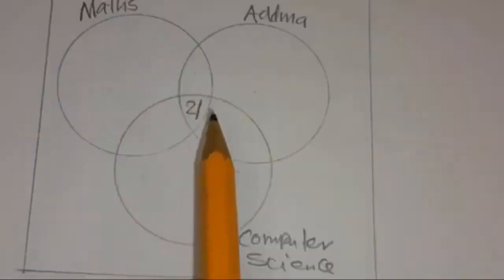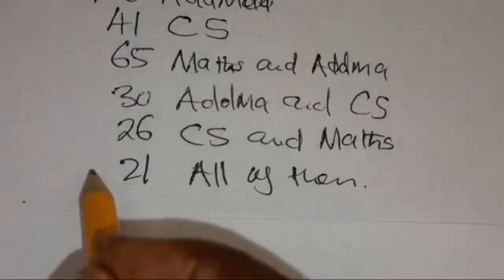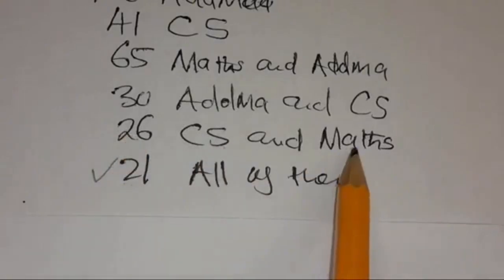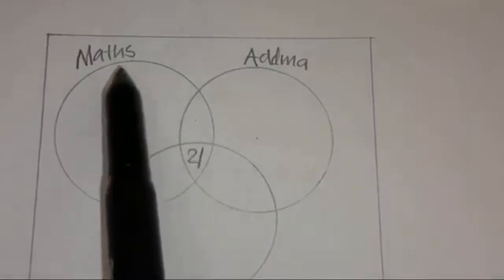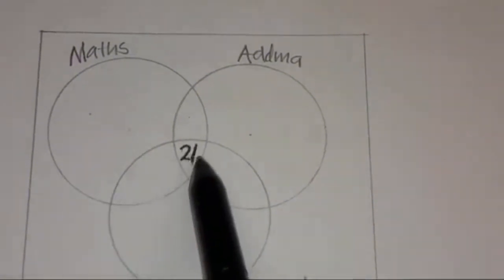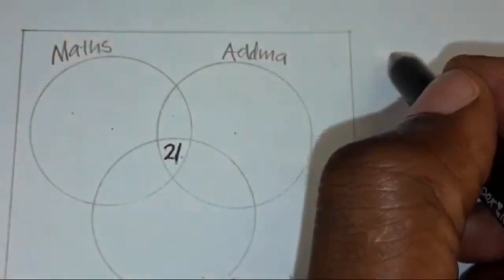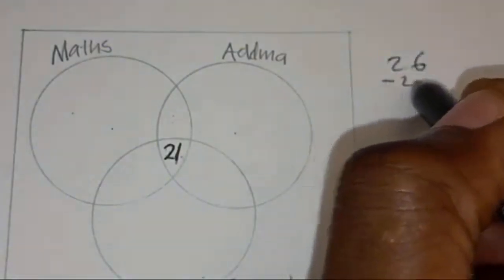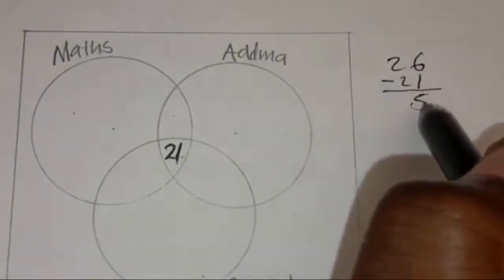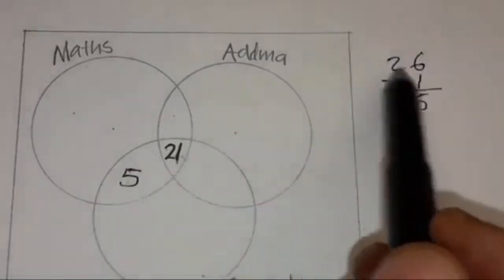Next, feed the Venn diagram the number of teachers that taught two subjects. 26 teachers taught computer science and maths. You cannot just put 26 here since you already have 21 at the intersection of Maths and CS. So you say 26 minus 21, which gives 5. Here you have 5 teachers, so that 5 plus 21 gives back 26.